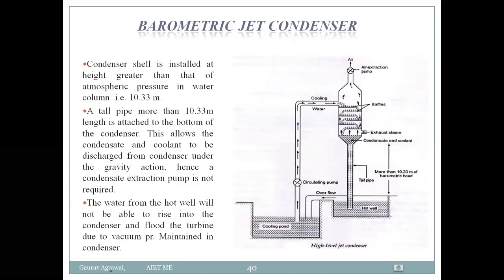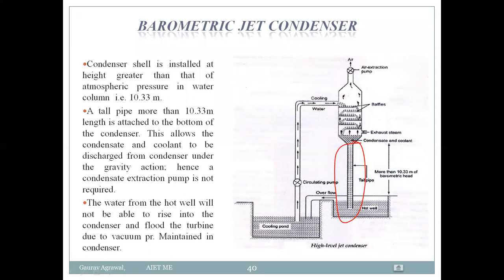Next is the barometric jet condenser. In this type, the condenser is installed at a height, and a pipe of 10.33 meters is created. This pipe height of 10.33 meters is significant because it corresponds to the atmospheric pressure equivalent in a water column.